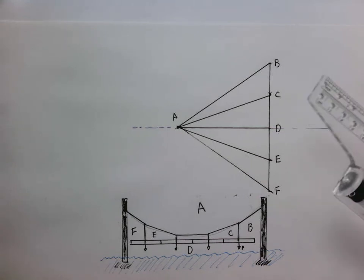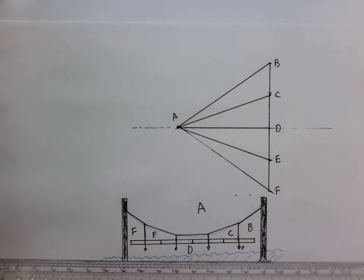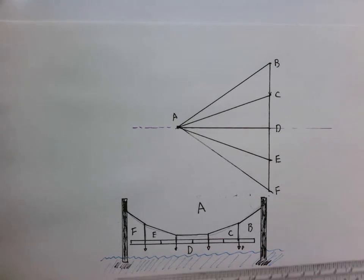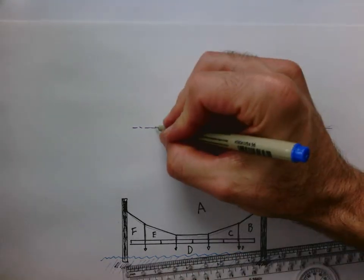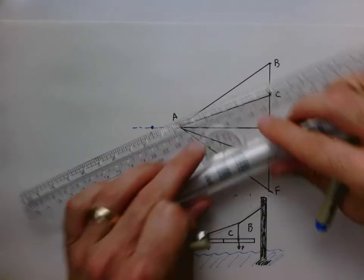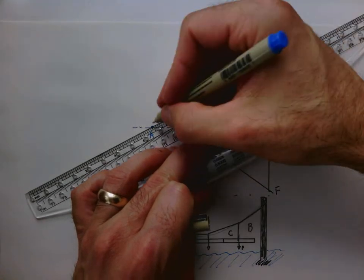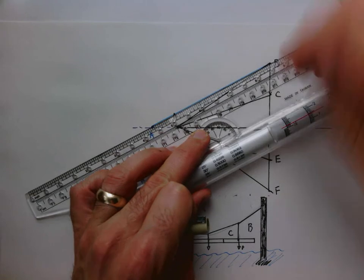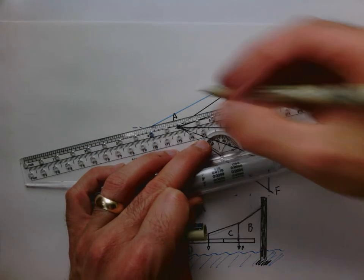But maybe we say, maybe I want this a little shallower and I want to see what that looks like. So I can take the same technique, but I can move, let's say I move point A out here. All right, so the force diagram is going to look basically the same. It's just going to be elongated out to the left.